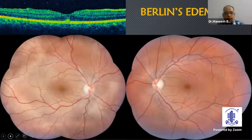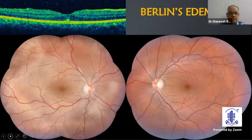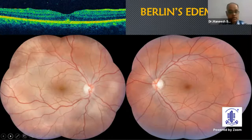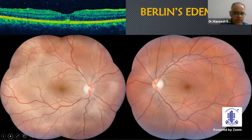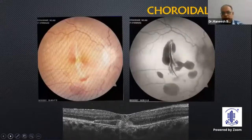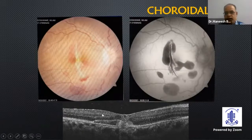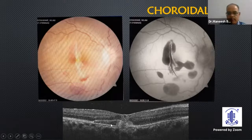Berlin's edema is not actually an edema - it is a transient whitening of the retina following blunt trauma, usually associated with outer segment injury of the photoreceptors, as we can see here in the OCT. Commotio retinae: if it is running through the fovea, as in this patient, there might be significant vision loss. In the OCT, we can see the commotio retinae along with subretinal hemorrhage in the sub-foveal space.